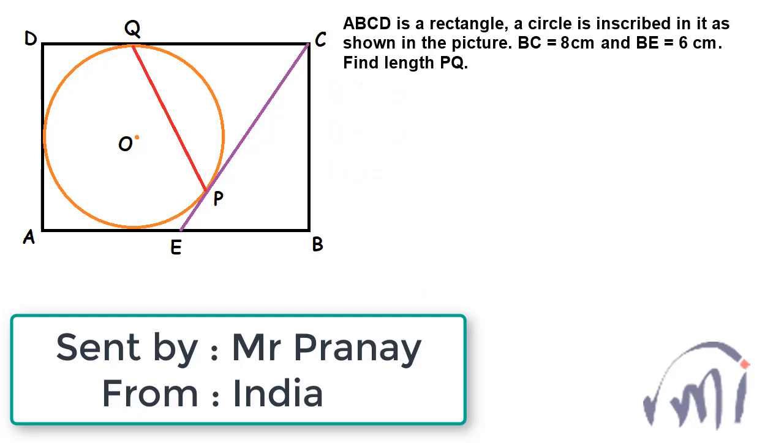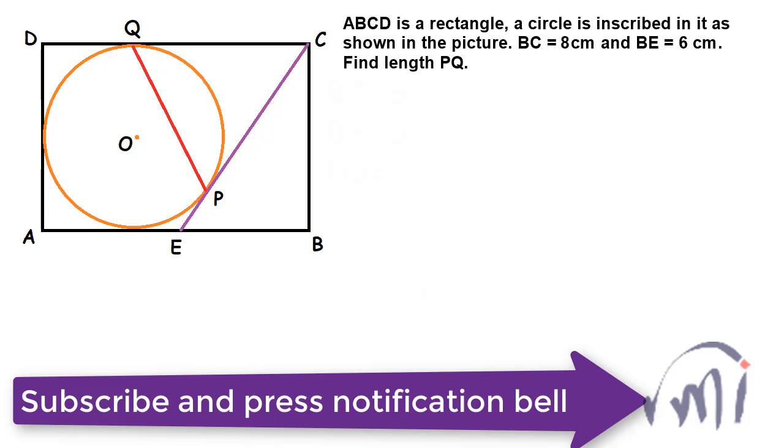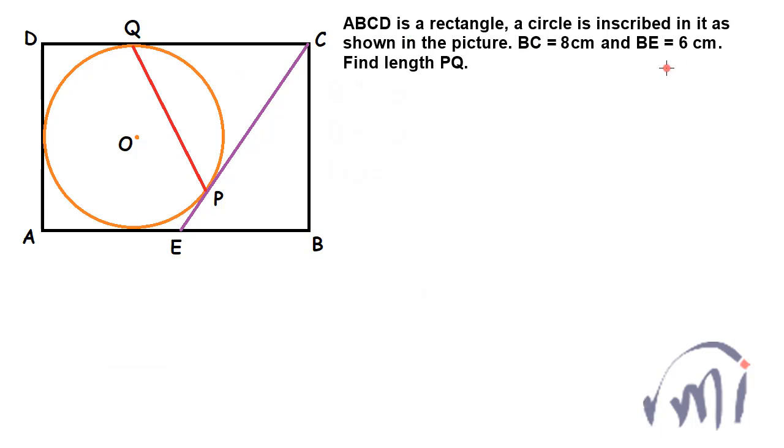Hi, so here we have a problem which was sent by Mr. Pranay from India. In this problem ABCD is a rectangle and a circle is inscribed in it as shown in the picture. BC is 8 cm and BE is 6 cm. So this much is 6 and this much is 8, and we have to find length PQ.